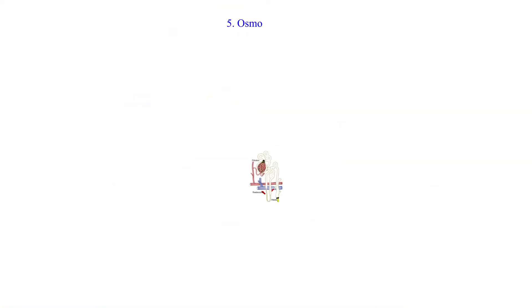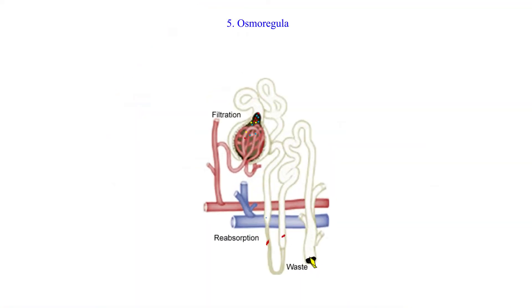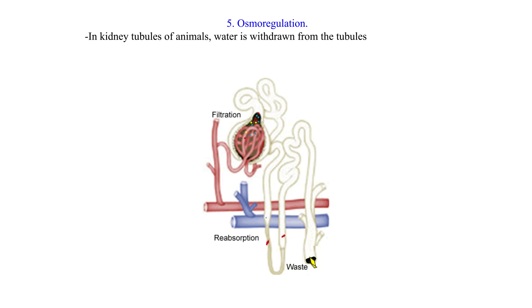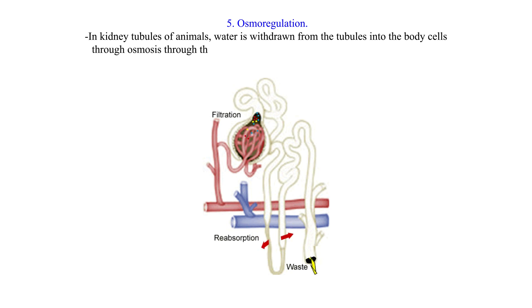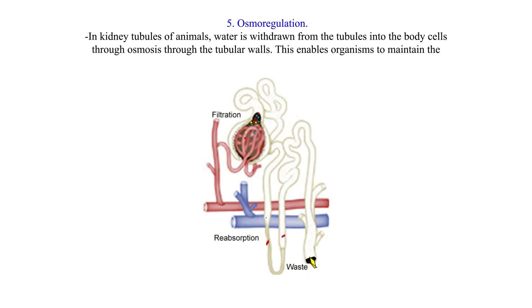5. Osmoregulation. In the kidney tubules of animals, water is withdrawn from the tubules into the body cells through osmosis through the tubular walls. This enables organisms to maintain the osmotic pressure of the body fluids.